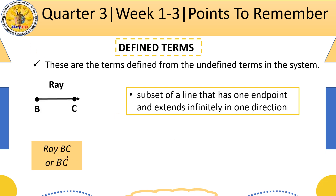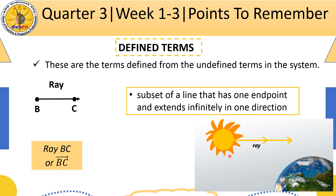Second, we have ray. A ray is a subset of a line that has one endpoint and extends infinitely in one direction. We name this ray as ray BC. An example of a ray is the ray of the sun.